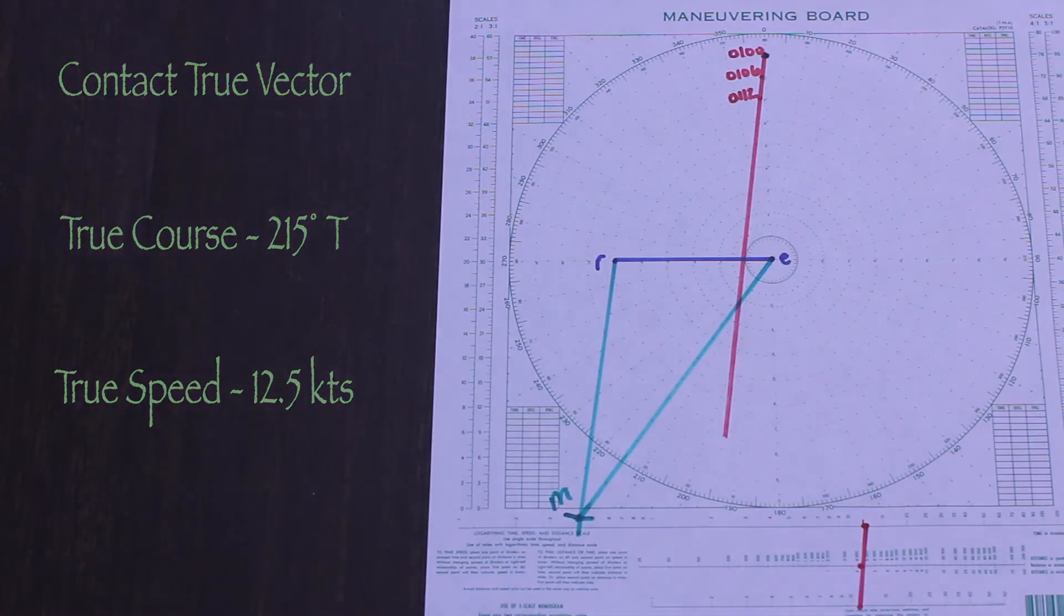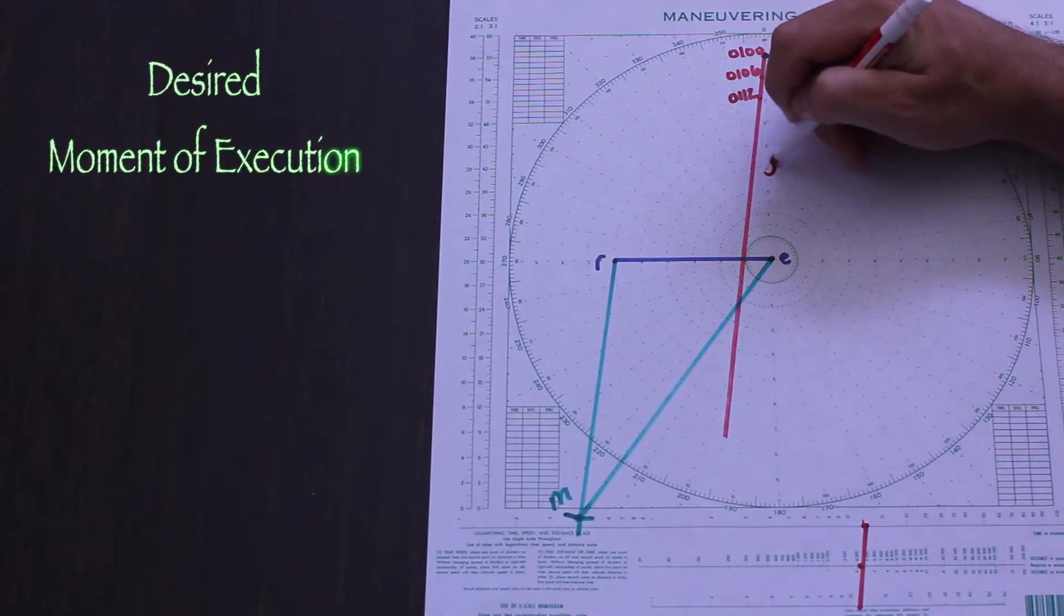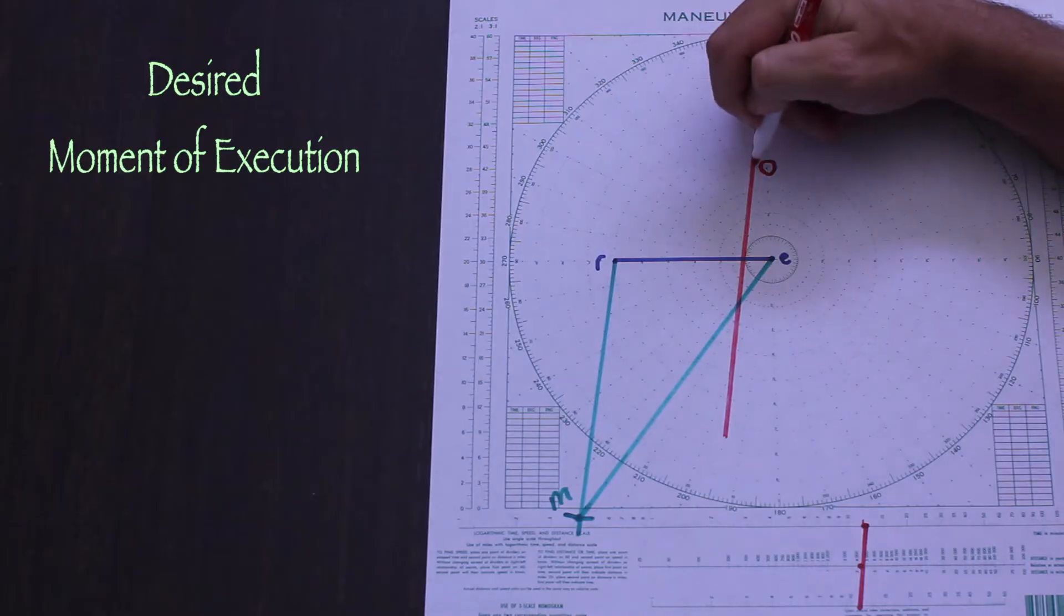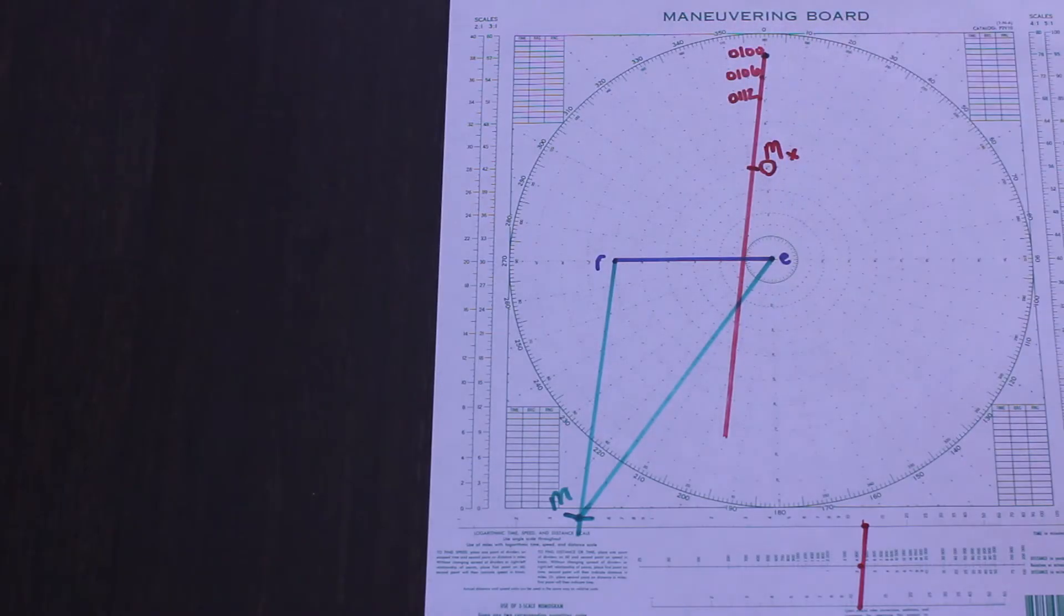Now we want to open this CPA up a bit. The first thing is to find a moment of execution, or Mx. Let's maneuver our ship when the contact reaches 4 nautical miles. So we'll plot Mx on the relative motion line when it crosses 4 miles from us.